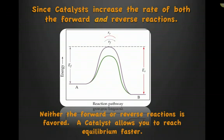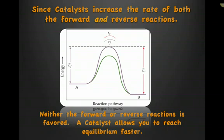What happens when you add a catalyst to a system? Since catalysts increase the rate of both the forward and reverse reactions, neither the forward nor reverse reaction is favored. That means a catalyst only allows you to reach equilibrium faster.